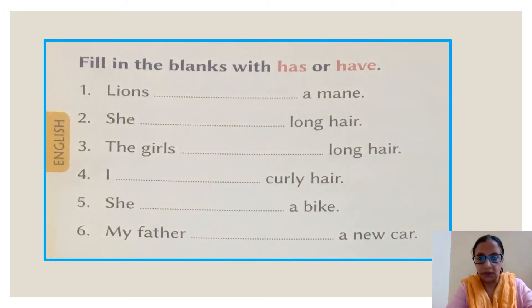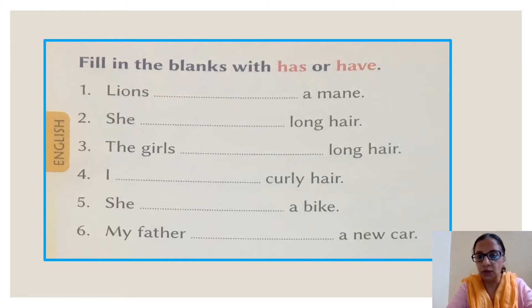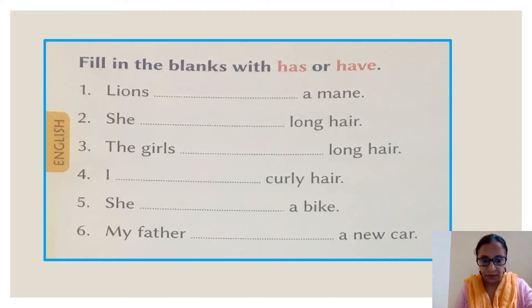This is an exercise given in your book. Let's read and do this exercise: fill in the blanks with has or have. Remember, students: for one person we will be using has, and for more than one person, for I as well as for you, we will be using have.